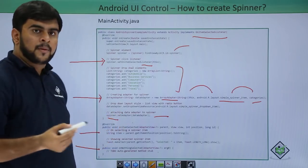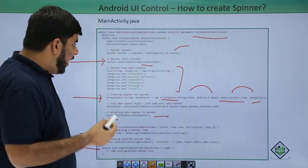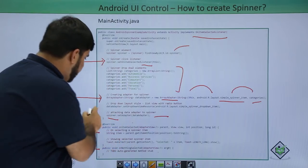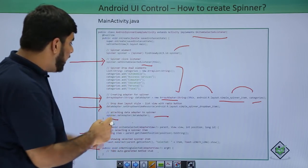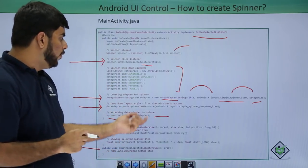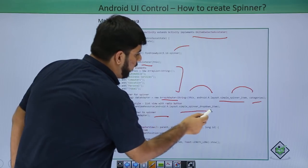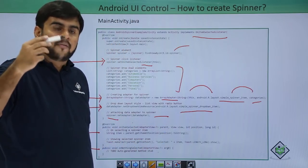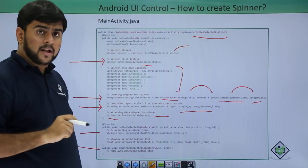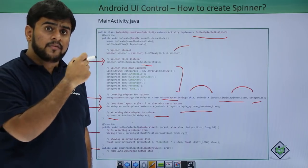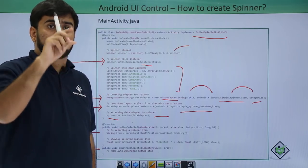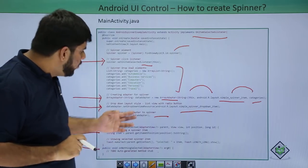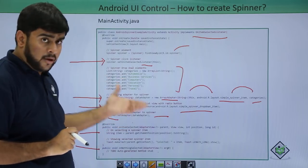After this, you just set the adapter into your Spinner using spinner.setAdapter(). If you want your Spinner to have a drop-down style, you can go for an additional option where you add setDropDownViewResource. This would help you have a drop-down with a radio button, like the one shown in the beginning. This is optional — you can also ignore it.